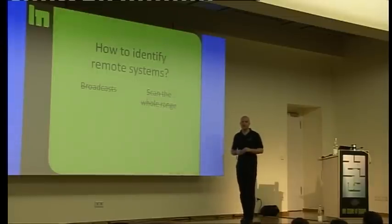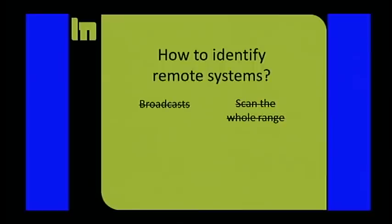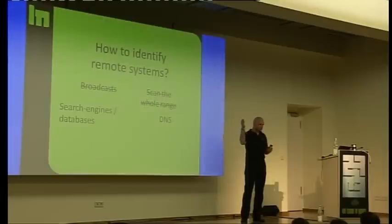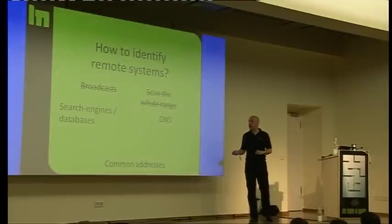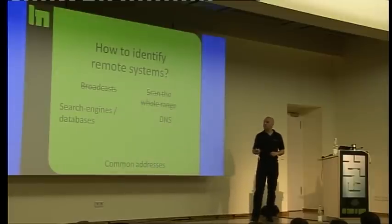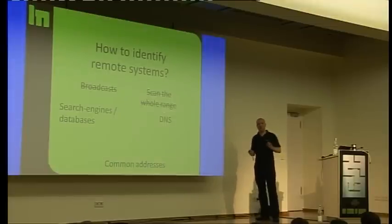We don't have broadcasts. We have search engine and databases, so we can Google for IPv6 addresses. We have DNS, where we can explicitly ask for IPv6 addresses, like www.google.com, give me the IPv6 address. And you have common addresses. I'm combining these two to get a pretty good view on what is really there.